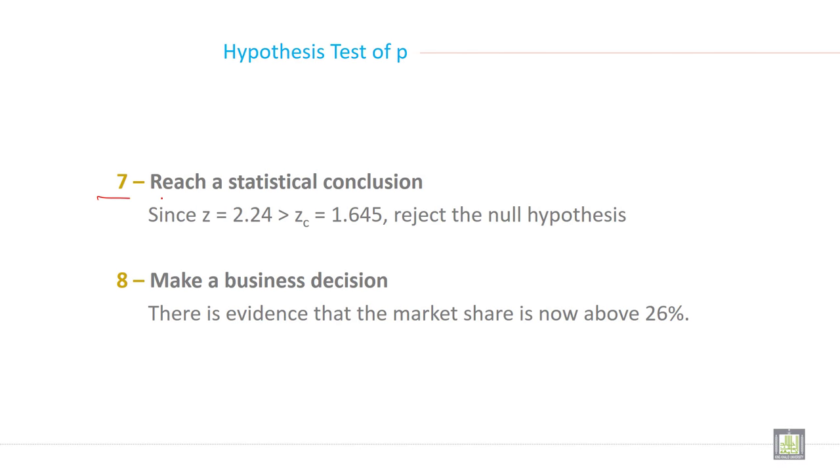Then step 7, reach a statistical conclusion. The statistical conclusion here is reject the null hypothesis because Z calculated is greater than Z tabulated. And then make a business decision. There is evidence that the market share is now more than 26%.